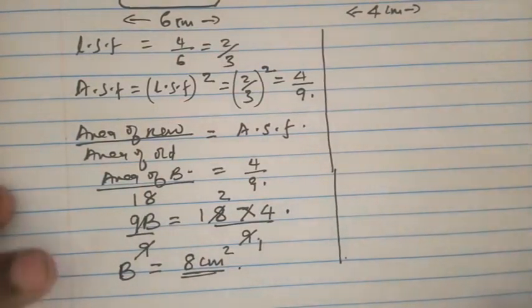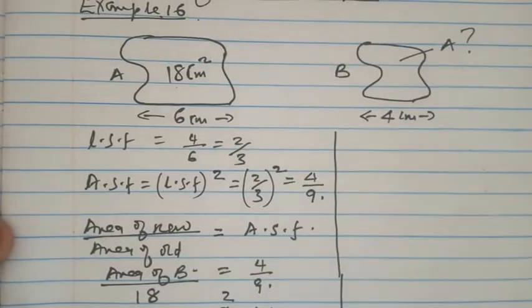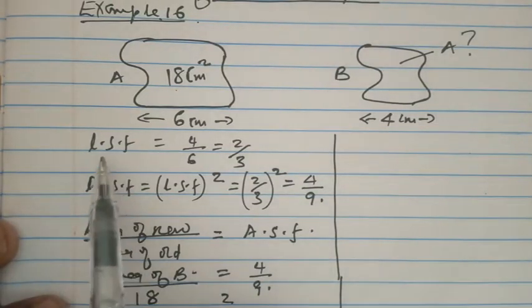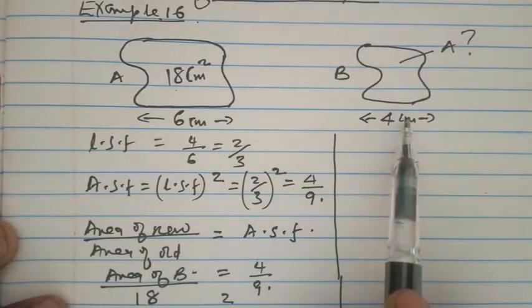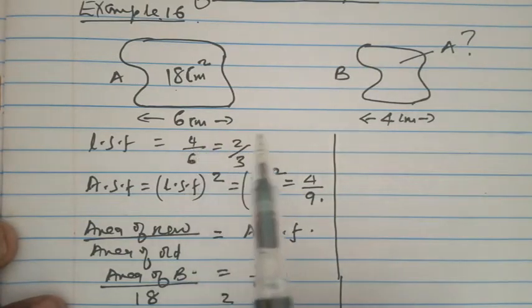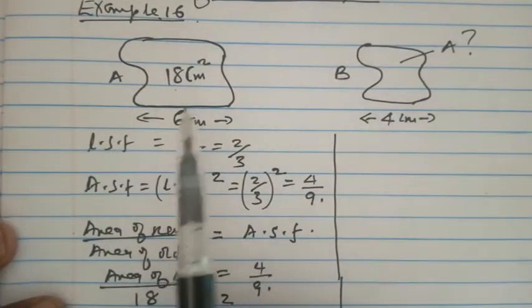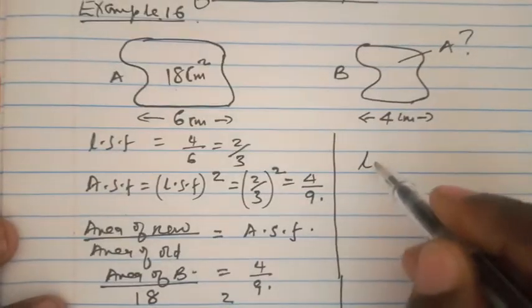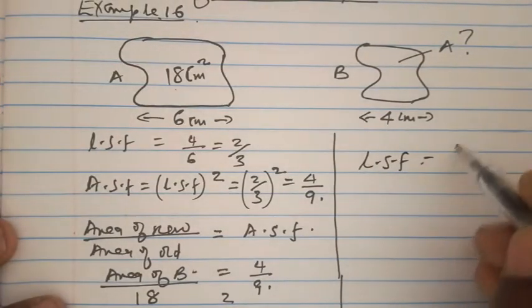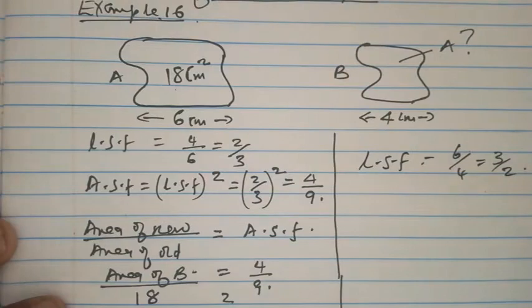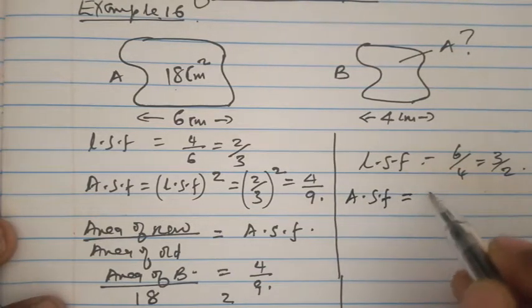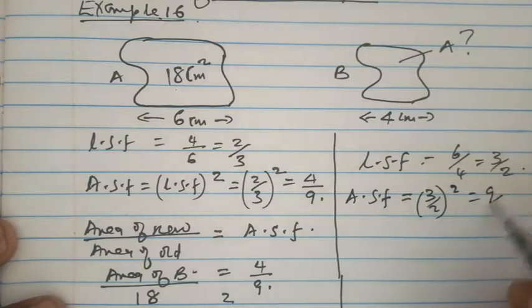I would like to take another approach to this question. The linear scale factor is the length of the new over the corresponding length of the old, but we can also take it as 6 over 4, which is 3 over 2, keeping the old shape's dimension in the numerator. The area scale factor then becomes 3 over 2 squared, which is 9 over 4.